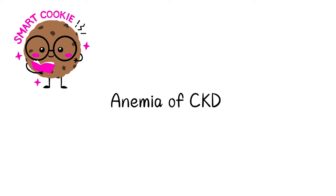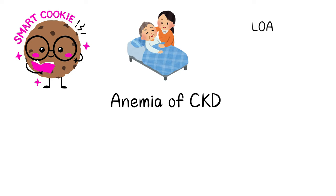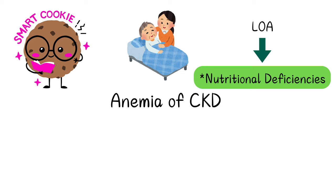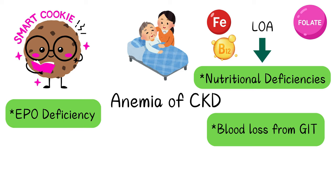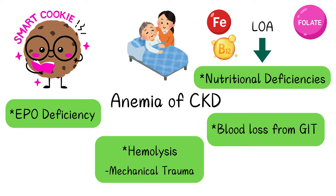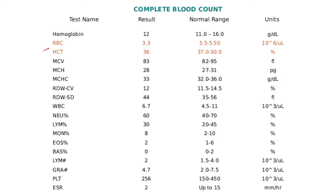Moving on to some important clinical points: the anemia in renal disease can be caused by several things, such as loss of appetite leading to nutritional deficiencies like iron, folate, and B12 deficiency. Blood loss from the GI tract and erythropoietin deficiency can also cause anemia. Hemolysis during dialysis, when blood hits the machine, can lead to breakdown of red blood cells. So when treating anemia in CKD, always examine the blood picture to determine the exact cause, and assess iron, folate, and B12 stores and treat accordingly.